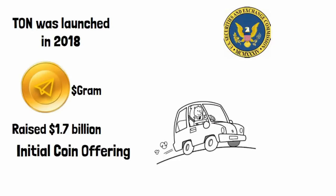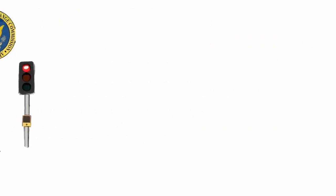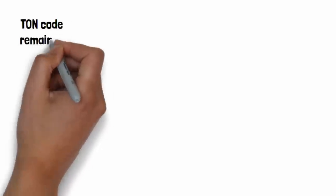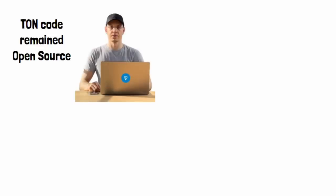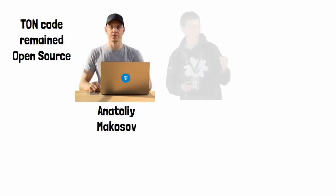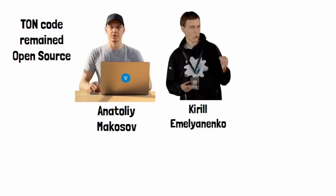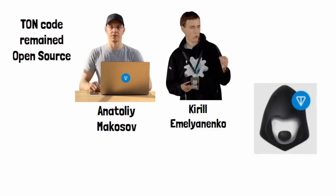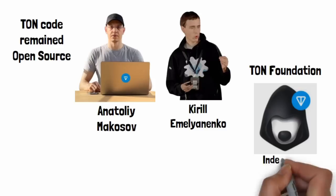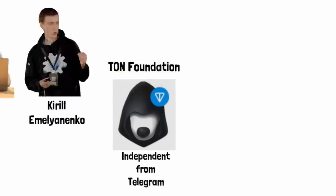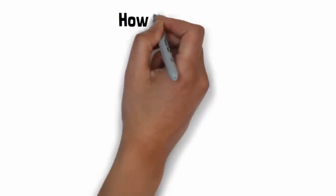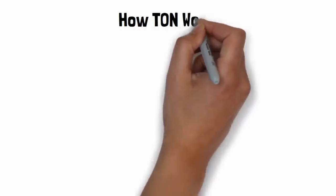But just as things were moving forward, legal action from the U.S. Securities and Exchange Commission forced Telegram to abandon the project in 2020. Despite this setback, the TON code remained open source, allowing developers like Anatoly Makosov and Kirill Emelyanenko to take the reins. Today the project is run by the TON Foundation, completely independent from Telegram, but with the Durov brothers' blessing.